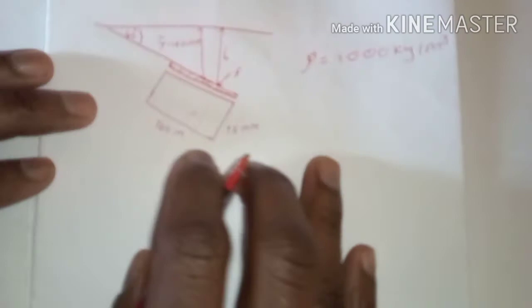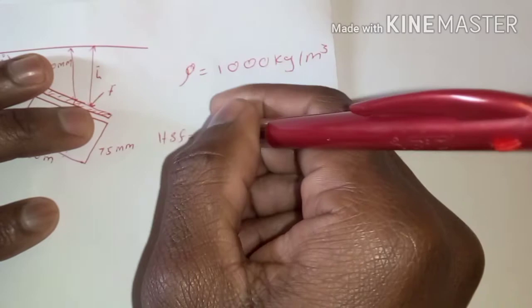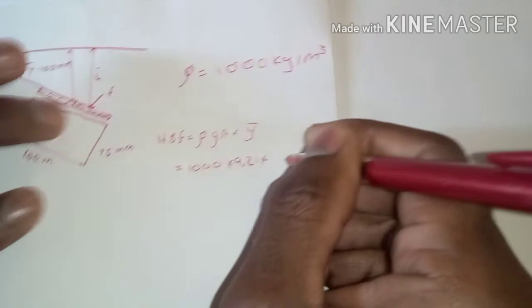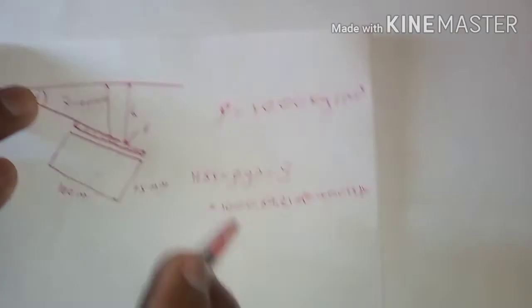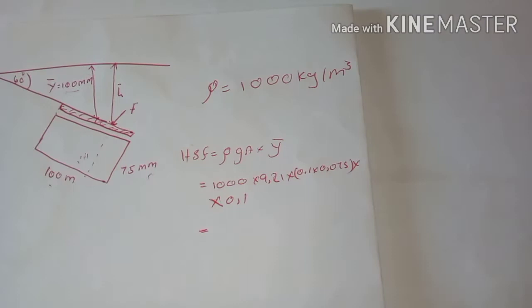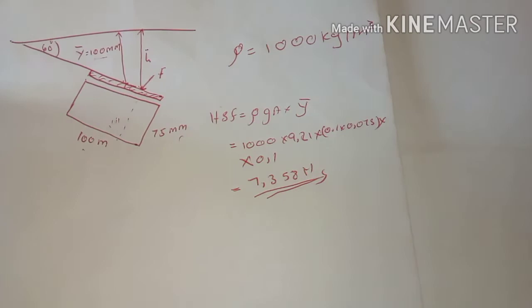We must first calculate the hydrostatic force. The formula is not changing: F = ρgAȳ = 1000 × 9.81 × (0.1 × 0.075) × 0.1, which gives us 7.358 Newtons. This is our hydrostatic force.